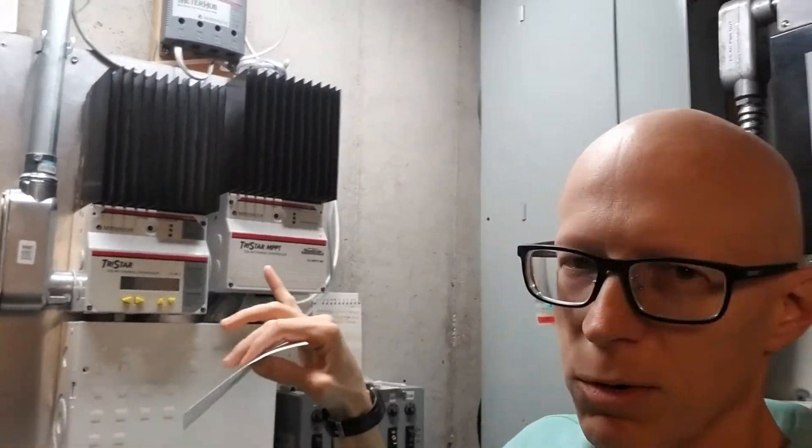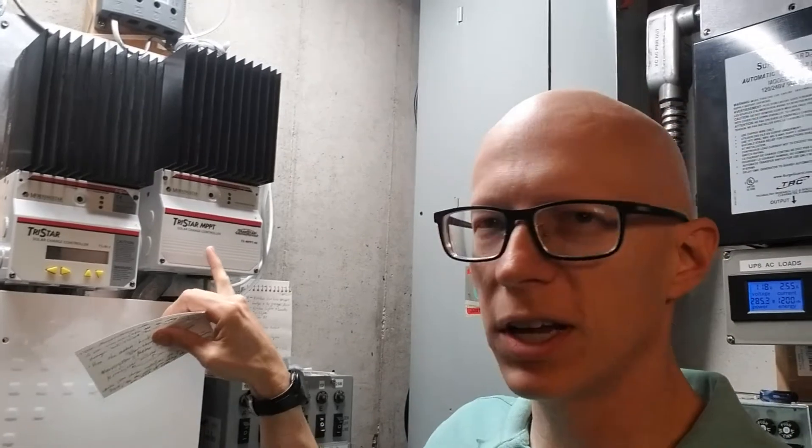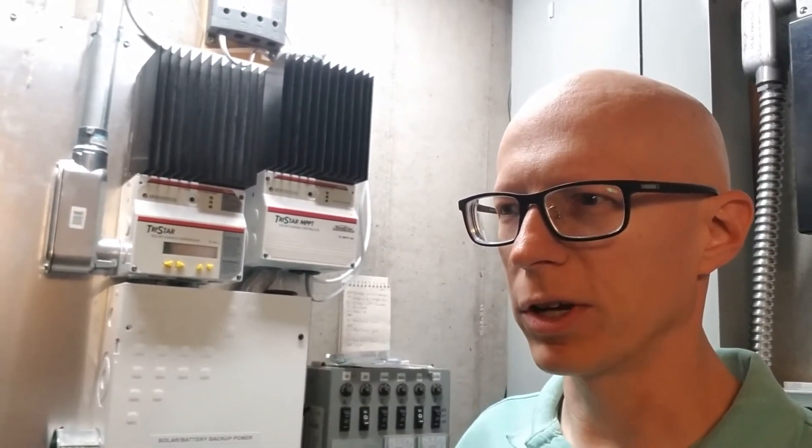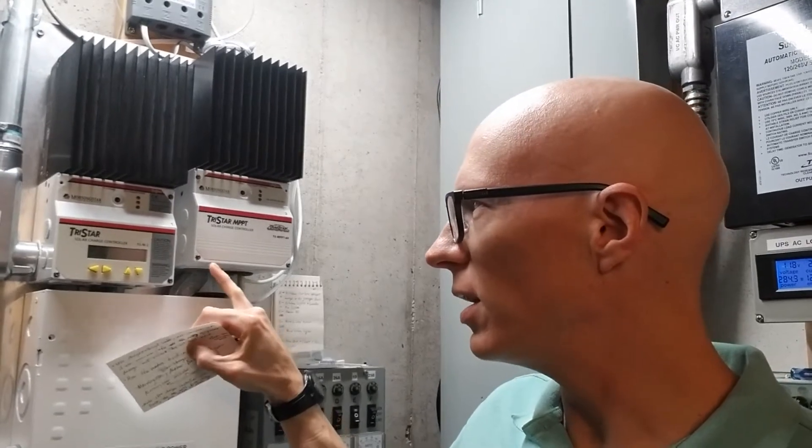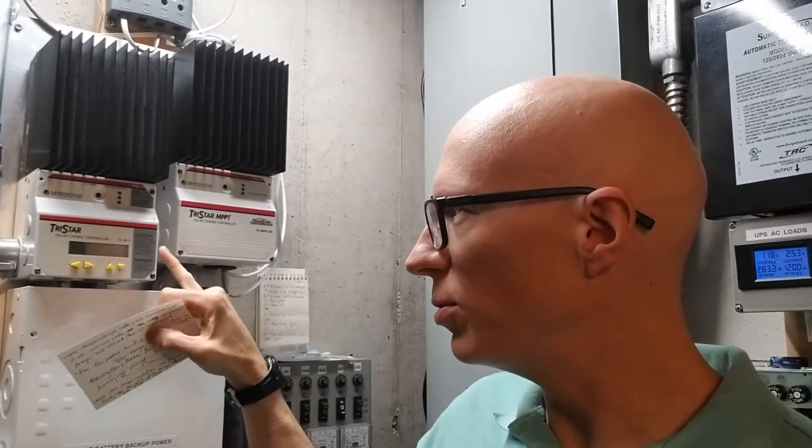But anyway, once I got everything hooked up and running, it's been running great. The only thing is, for some reason I can't get this one to get the same max voltage setting as this one. It's a little bit off and I haven't quite figured it out yet. I haven't contacted Morningstar about it really yet. But sometimes it'll dictate off of this one, so it'll go to a higher voltage than what this one's set for, and this one goes to zero.